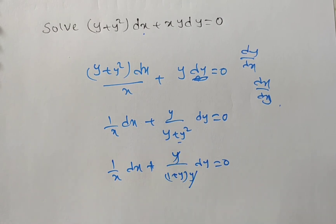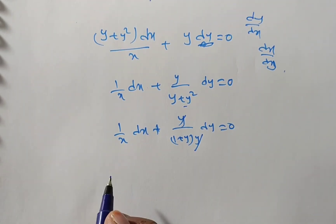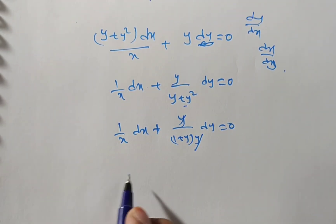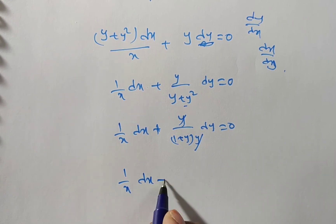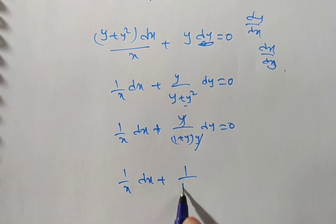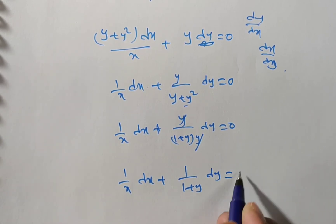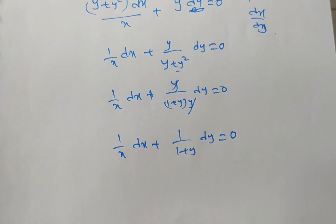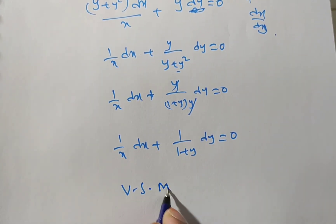The y in the denominator and the y in the numerator cancel. Then you will have (1/x)dx + 1/(1 + y) dy = 0. Now you can apply the variables separable method.